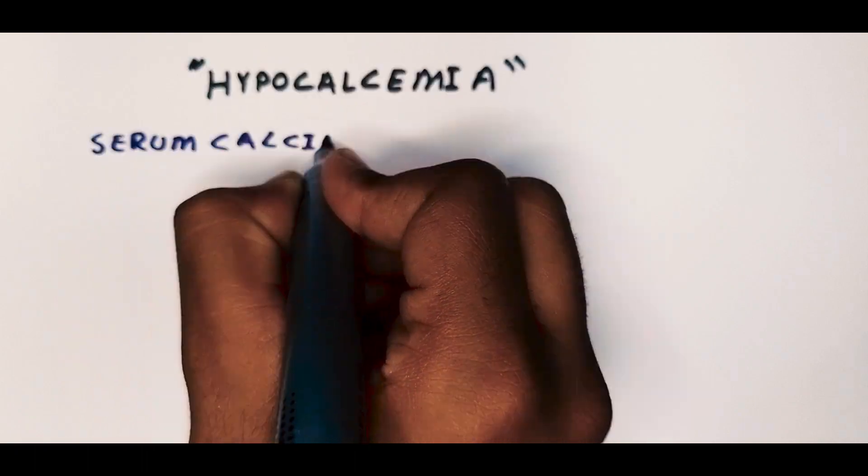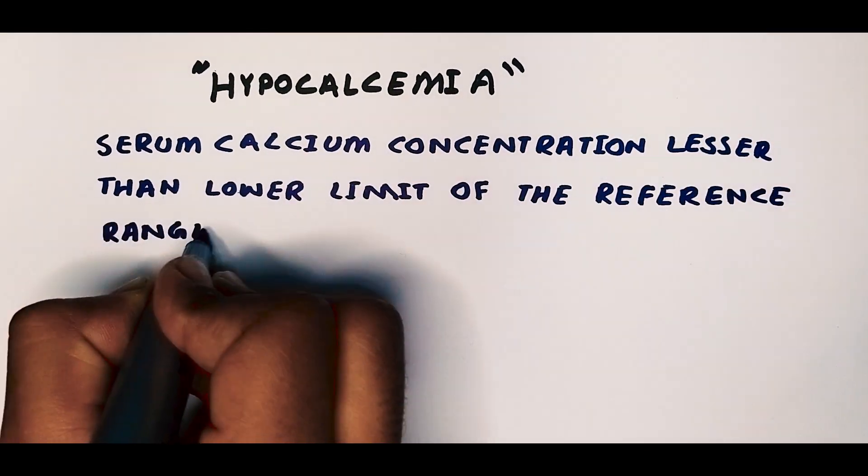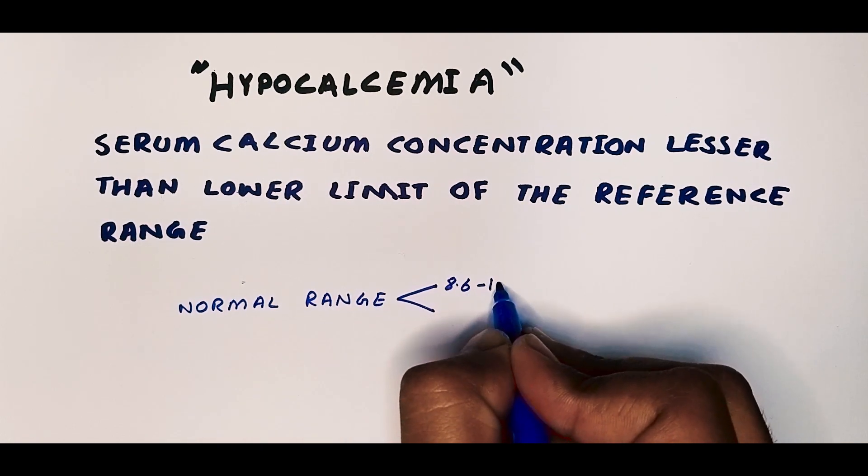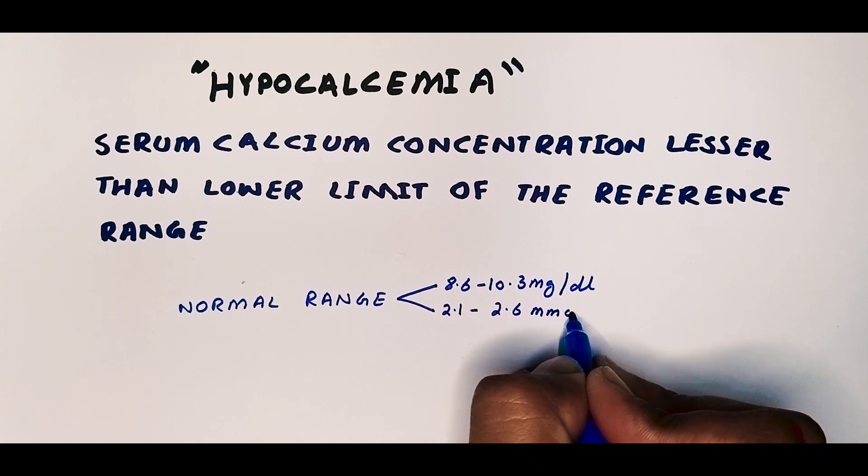Now hypocalcemia is when the serum calcium concentration is lesser than the lower limit of the reference range, the normal range being 8.6 to 10.3 mg per deciliter, or 2.1 to 2.6 millimoles per liter.